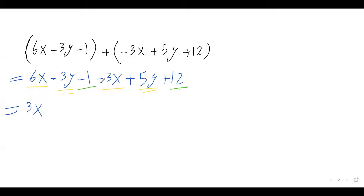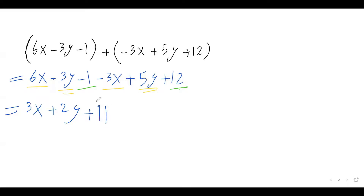And I have negative 3y and positive 5y. We write the variable and combine the coefficients: negative 3 plus 5 is positive 2, so plus 2y. And then I have negative 1 plus 12 which is just positive 11. That's our answer for this expression.